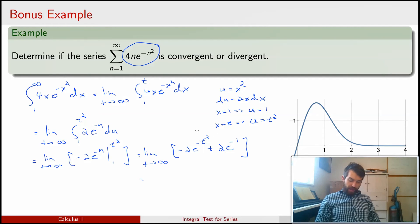And then if I evaluate this, as t goes to infinity, this whole first term is going to 0. So I'm just left with this 2 over e, and therefore, that's my answer.